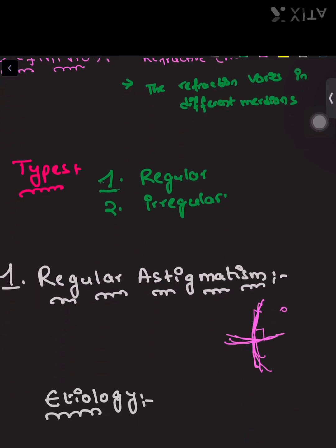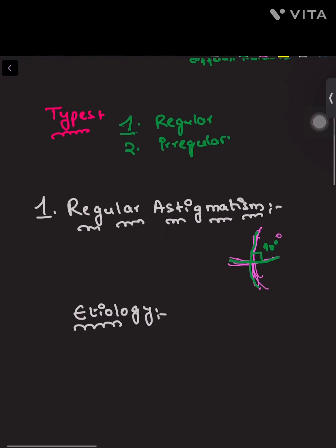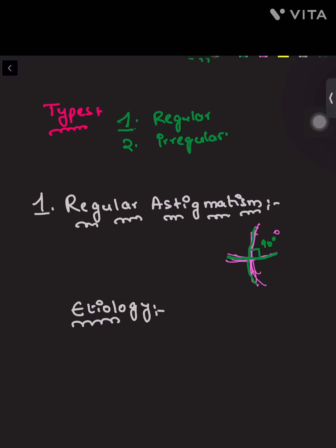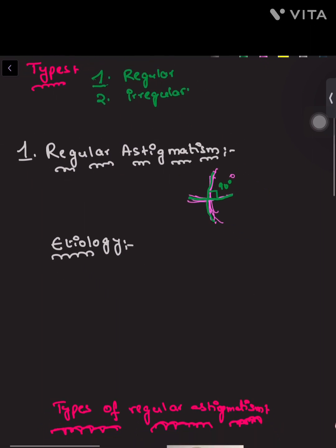Regular astigmatism is that in which the two principal meridians have refractions where the rays of light form an angle of 90 degrees to each other. If it is other than 90 degrees, then we call it irregular astigmatism.